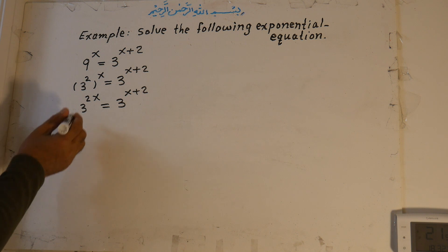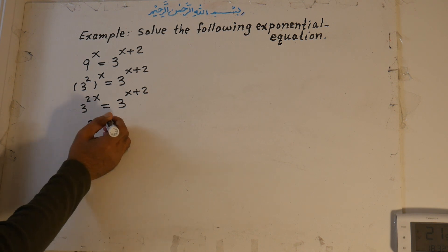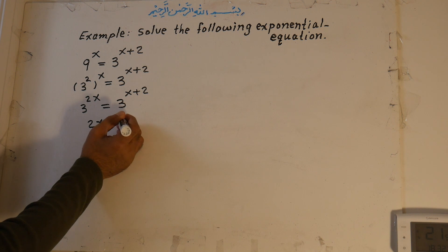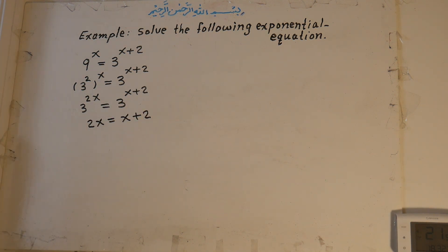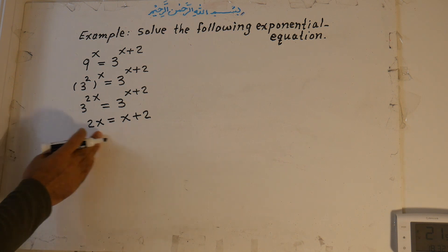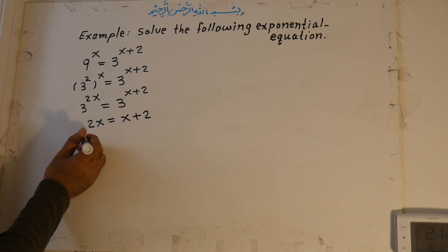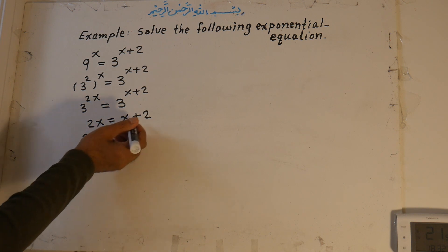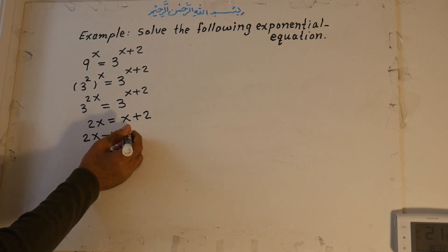Since the bases are equal, we put the exponents equal to each other: 2x equals x plus 2. This is now a first-order equation with one unknown. We bring all the unknowns to the left side and all the numbers to the right side.